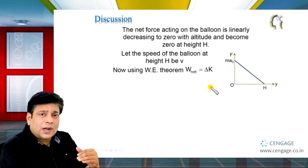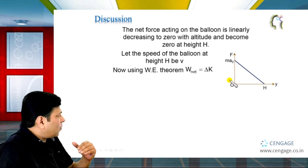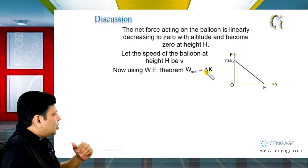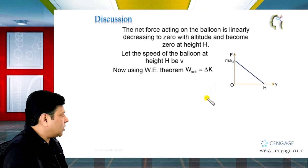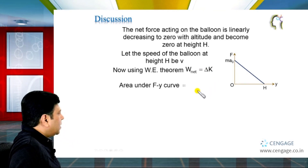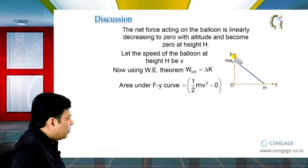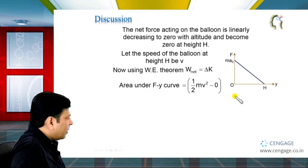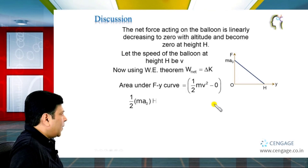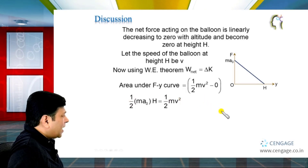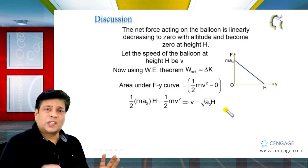The work done equals the area under the F-y graph, and this should equal the change in kinetic energy, which is ½mV² − 0. The area of this triangular graph equals mA₀ × H divided by 2. Setting this equal to ½mV², we get mA₀H/2 = ½mV², from which we can find the speed of the balloon at height H: V = √(A₀H).